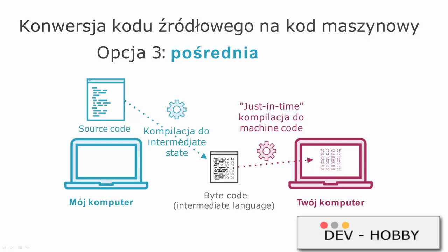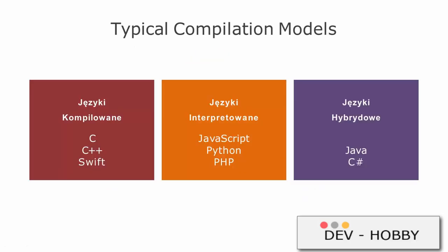Understanding these different options is important, but it is not something that should be a major point of concern or immediate decision. Most programming languages can be easily classified as compiled, interpreted, or mixed, depending on their nature, with some borderline cases and exceptions. Compiled languages such as C, C++, and Swift typically use simple compilation. Languages such as JavaScript, Python, and PHP typically operate in interpretation mode. The most famous languages that take a hybrid approach are Java and C#.